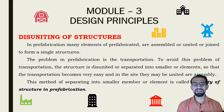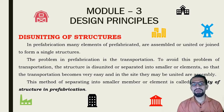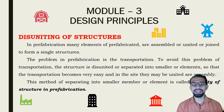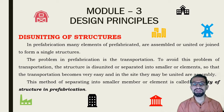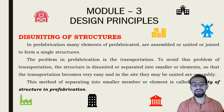In prefabricated structures, as we have already seen, there are some elements which are separated and cast — they are manufactured separately and then brought to the site, where they are fixed and a particular part of a building or a whole building is made ready for the inhabitants. The most important design principle starts with the disuniting of structures.